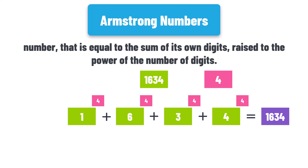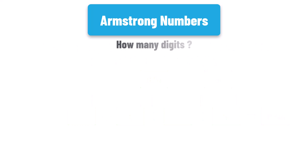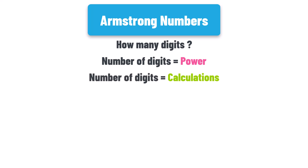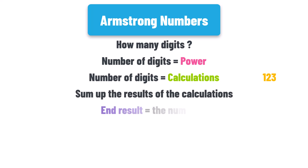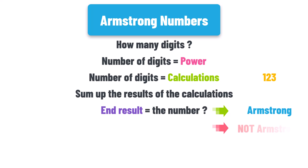In summary, to check if a number is an Armstrong number we do the following steps. First, we check how many digits are in the number — the number of digits will be the power used in the calculations, and we will have as many calculations as the number of digits. For example, the number 123 consists of three digits, so we have three calculations and the power used is three. After that, we sum up the results. If the end result is exactly the same as the number itself, it is an Armstrong number; otherwise it is not.